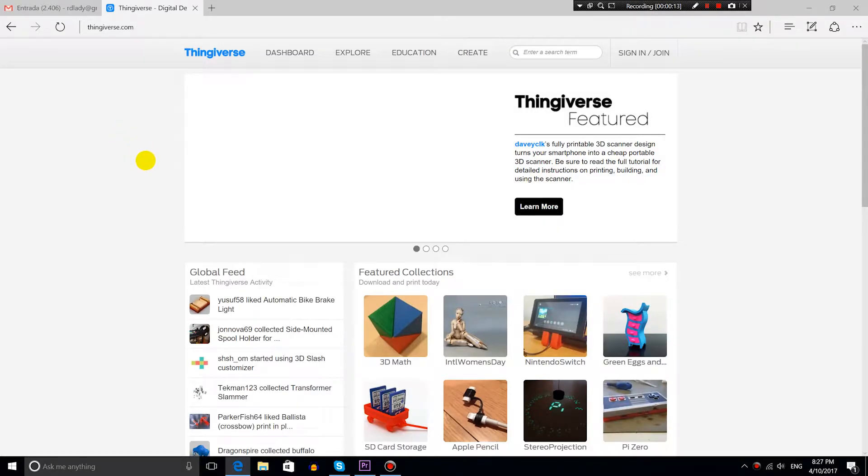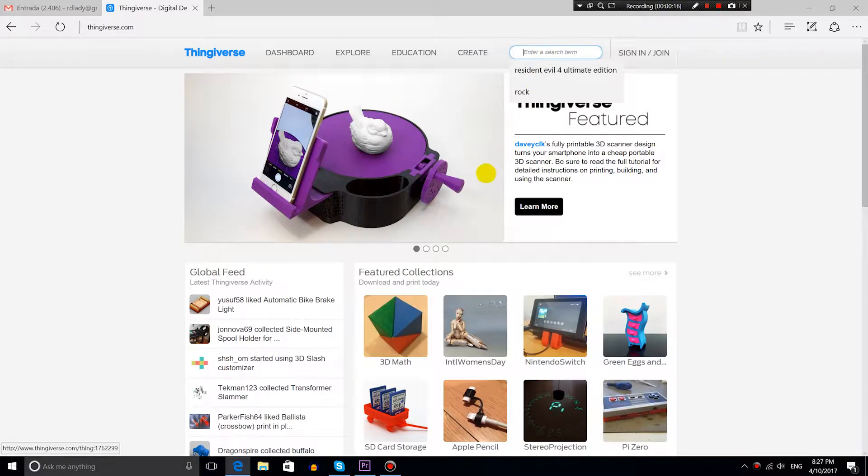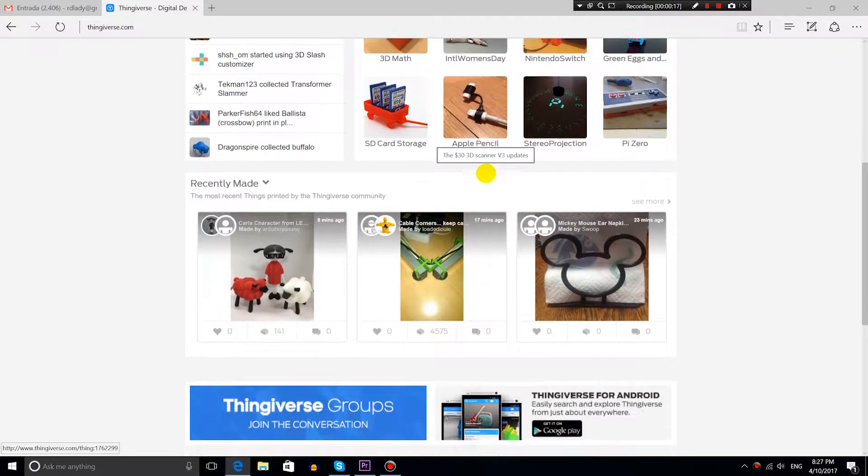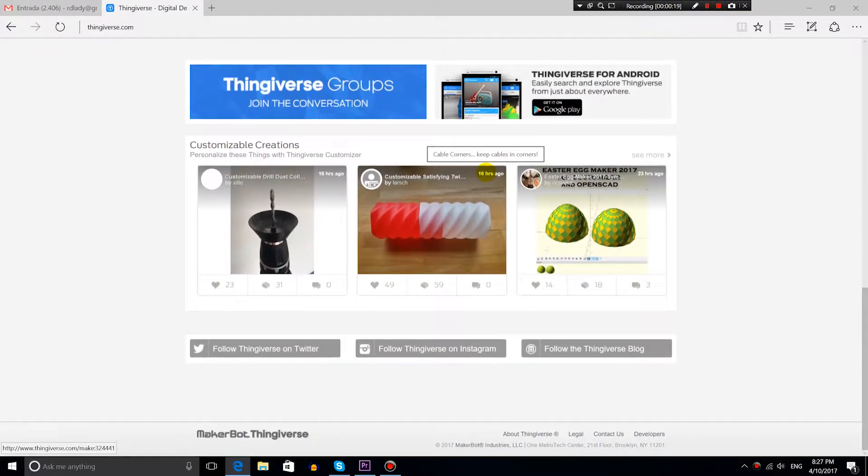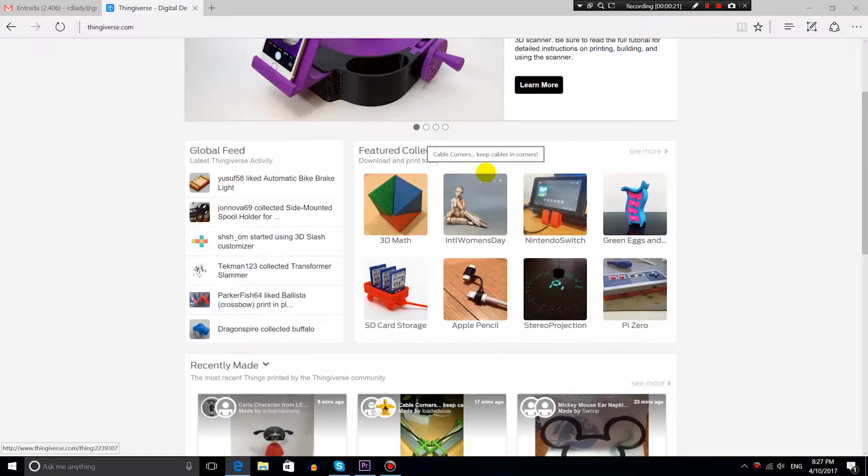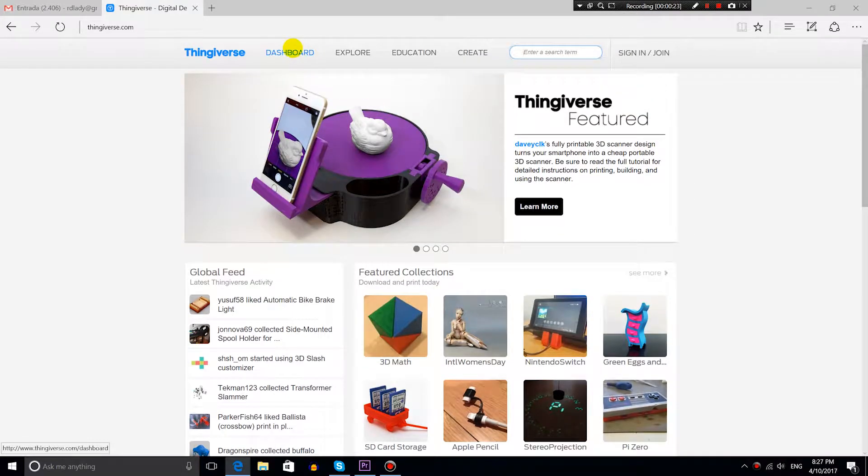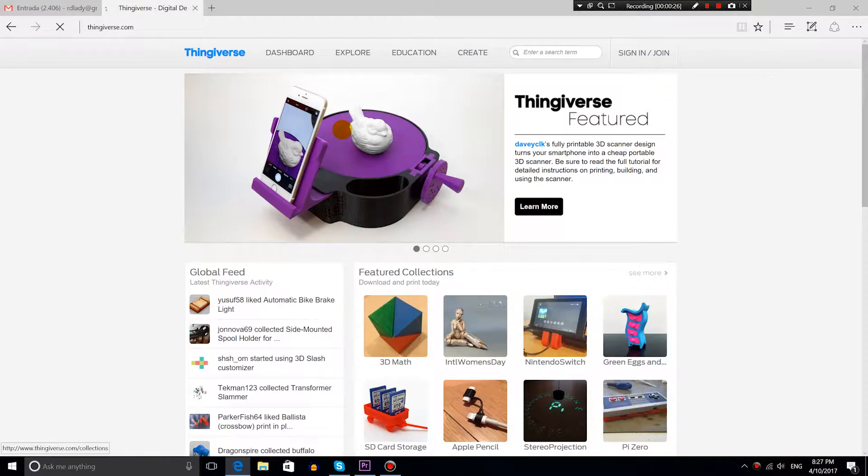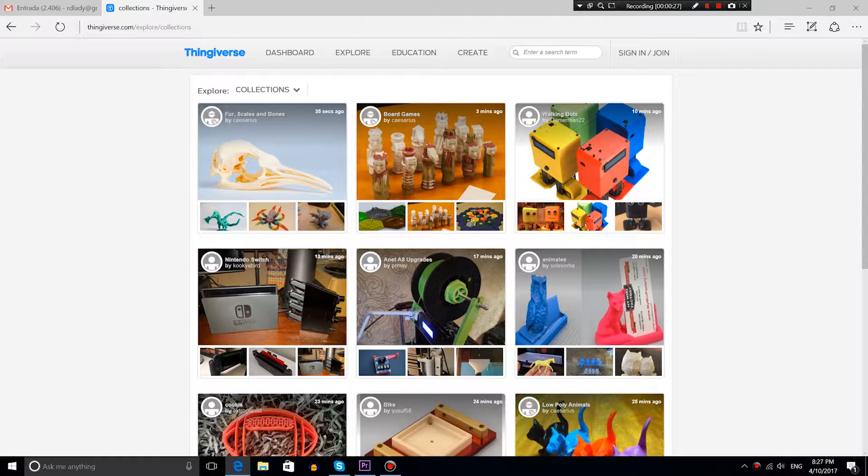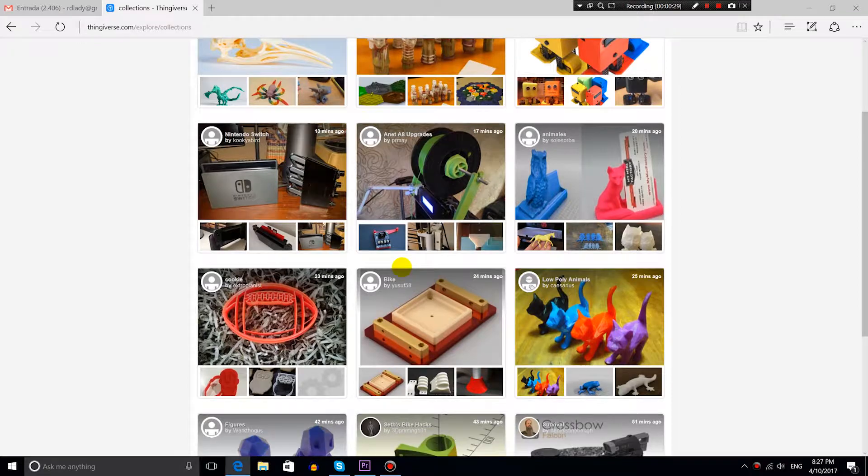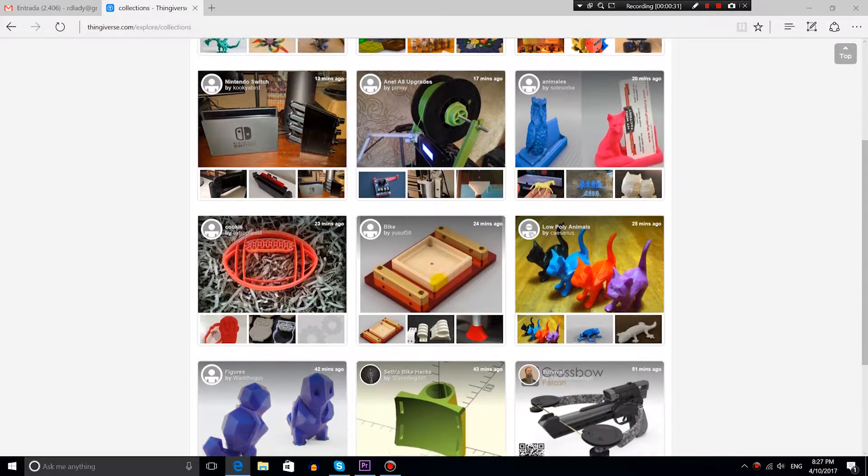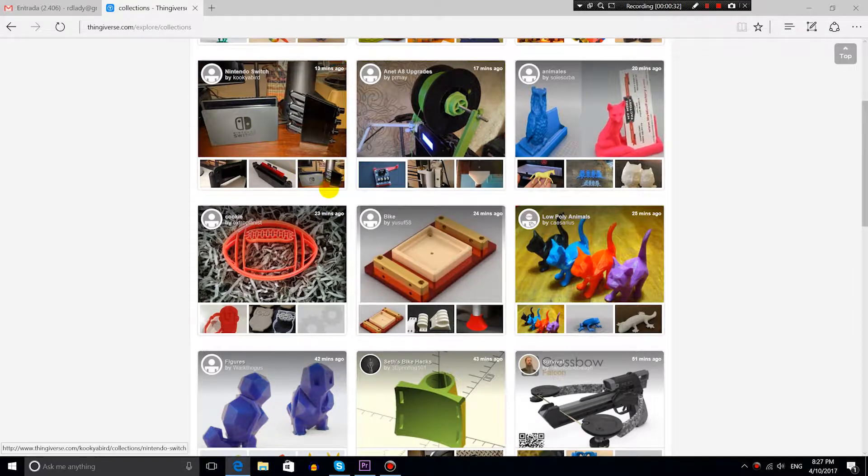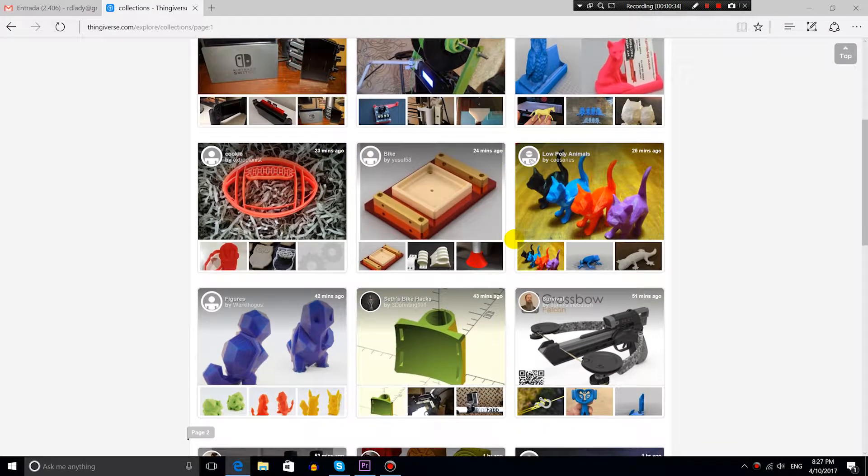Before showing how I 3D printed a Bulbasaur, I would like to show where I found the 3D model. There is a website called Thingiverse and this website has many 3D models available for download. All these models can be downloaded for free in STL format which is the format supported by most 3D printers. This website may be a very useful and critical resource for everyone starting their first 3D prints. The process is very fast and easy.